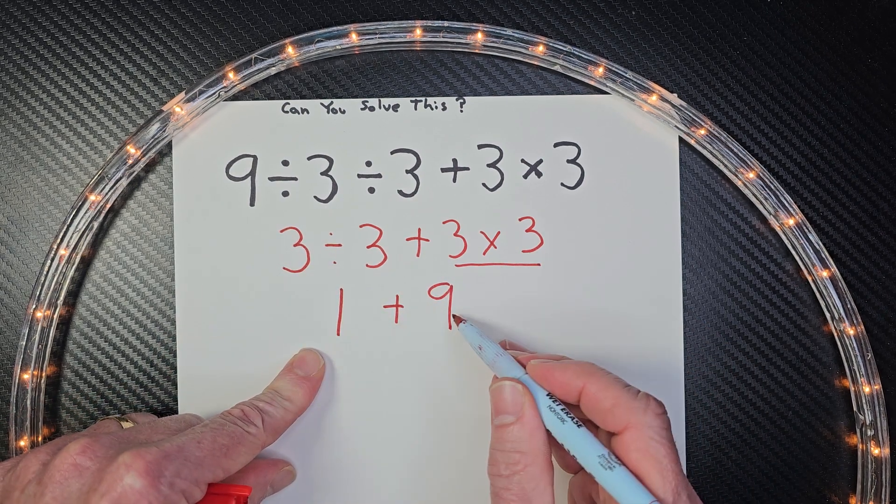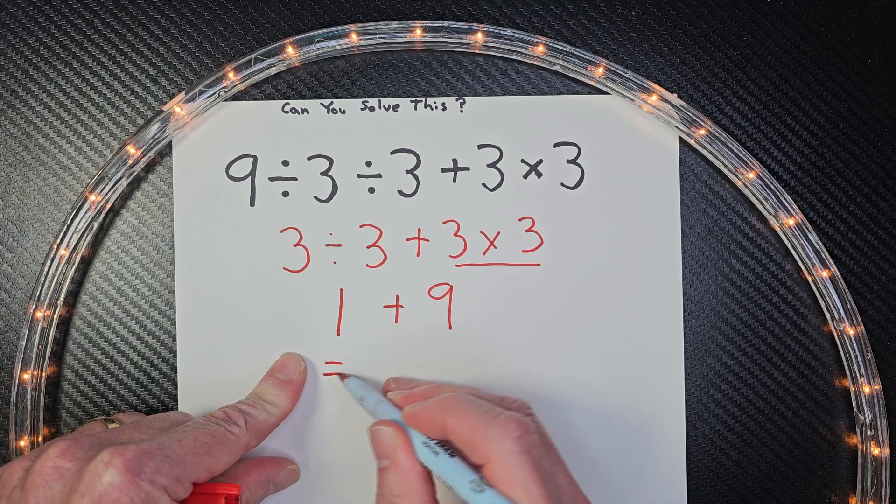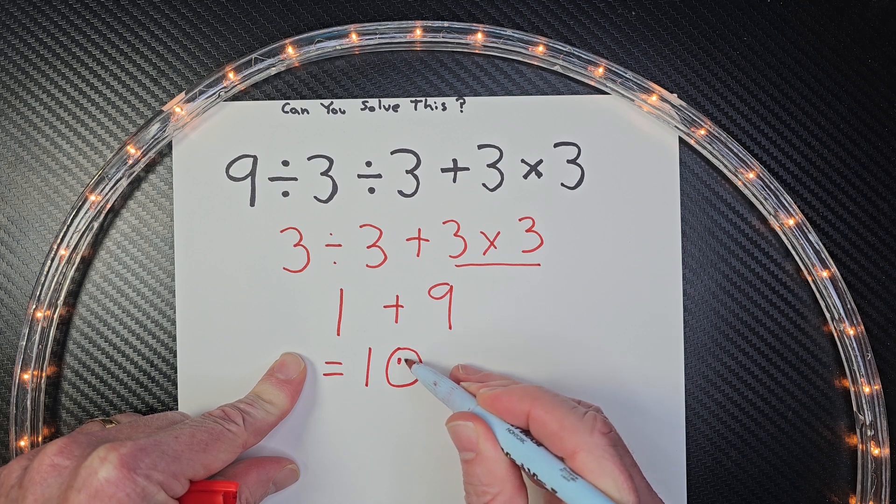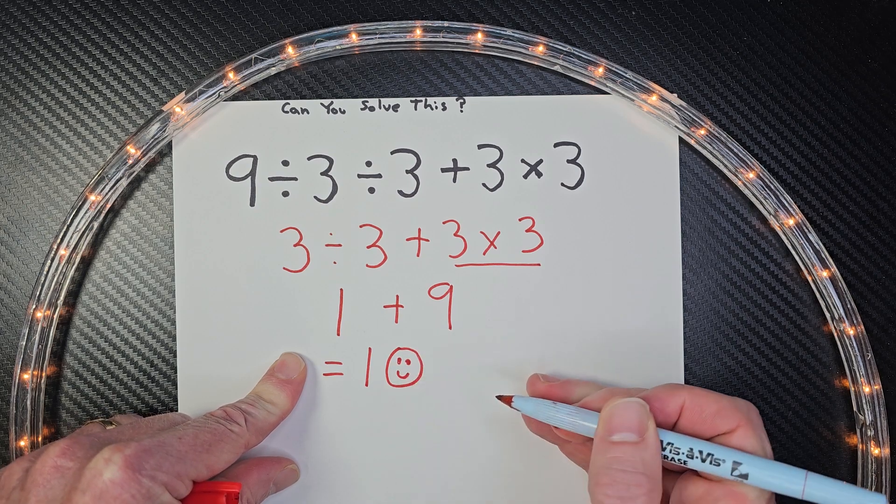So then I have 1 plus 9, and then our last step is to add these two numbers, and that would equal 10. I'll put a little smiley face right here, and I hope you are smiling too.